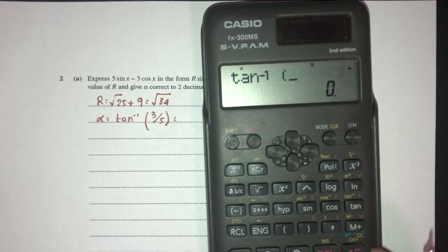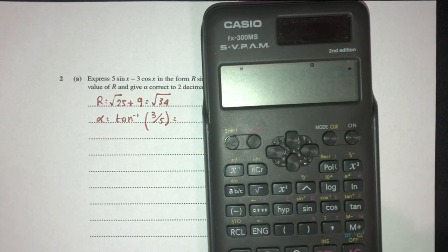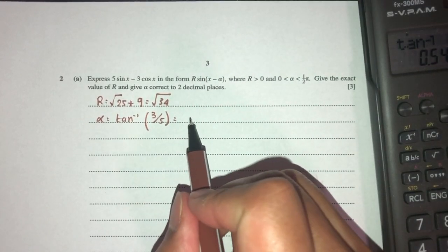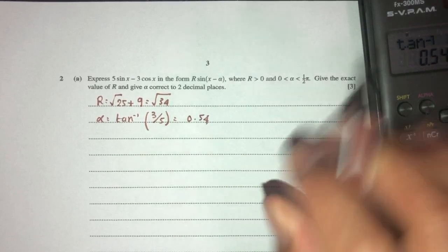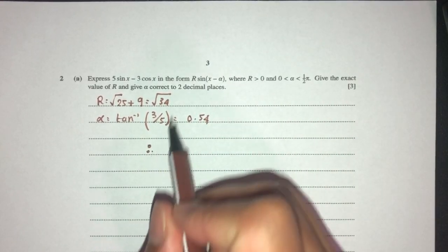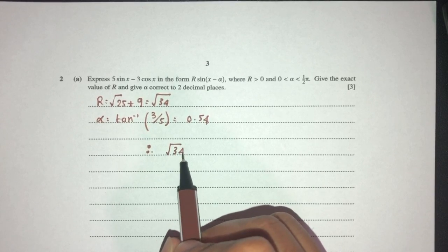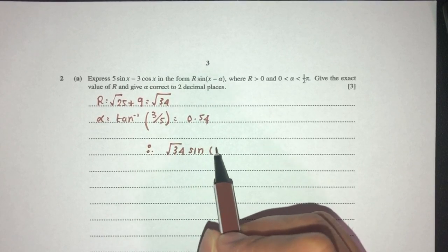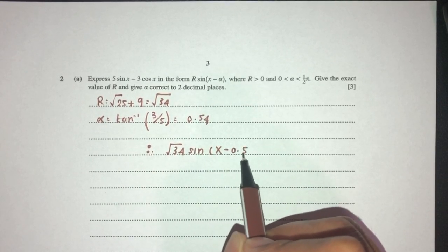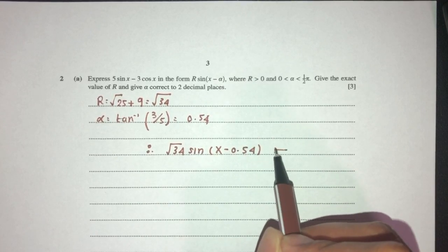Using radians, that should be 3 over 5. That would be 0.54, correct to two decimal places. Therefore, in the end, it should be r is root of 34, sine of (x minus 0.54) as your answer for part one of your question, for three marks. Let's move on.